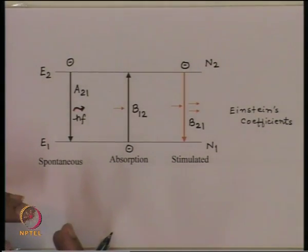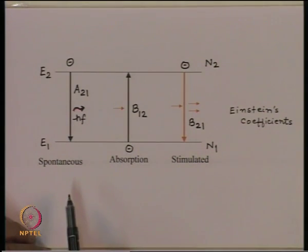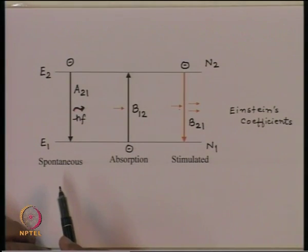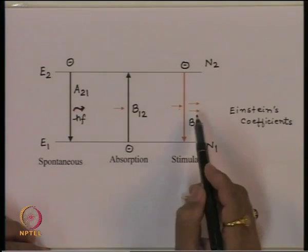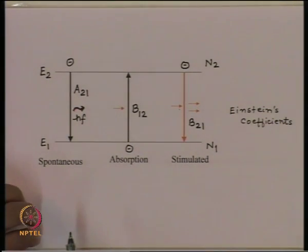From there we concluded that we can manipulate the energy levels and the lifetime of the electrons in different energy levels so that there is a net population inversion — that means there are more electrons in the upper state compared to the lower state. Then in the presence of a photon, the stimulated process will start and you will have coherent emission coming out of the material.